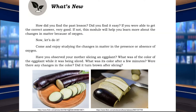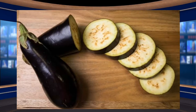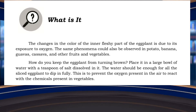How did you find the past lesson? Did you find it easy? If you were able to get the correct answers, very good! If not, this module will help you learn more about the changes in matter because of oxygen. Now let's come and enjoy studying the changes in matter in the presence or absence of oxygen. Have you observed your mother slicing an eggplant? What was the color of the eggplant while it was being sliced? What was its color after a few minutes? Did it turn brown after slicing? The changes in color of the inner fleshy part of the eggplant is due to its exposure to oxygen. The same phenomenon could also be observed in potato, banana, guava, cassava, apple, and other fruits and vegetables.